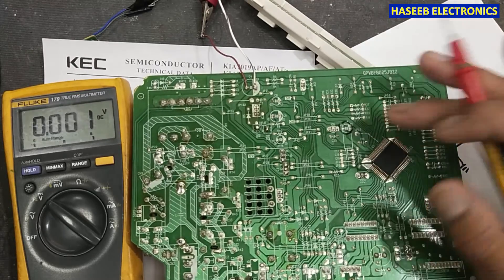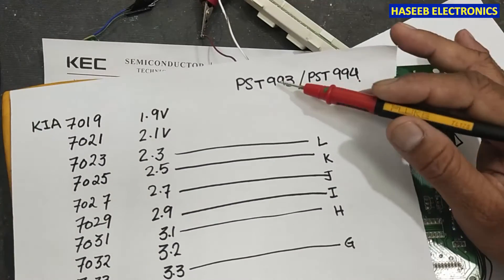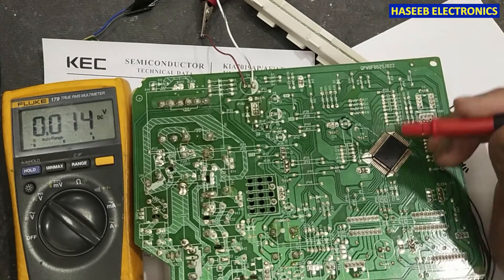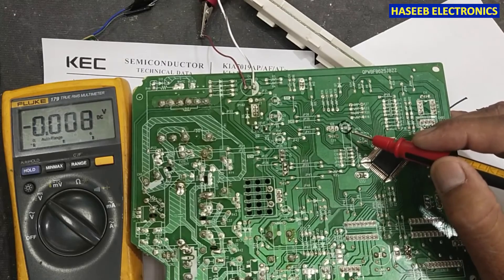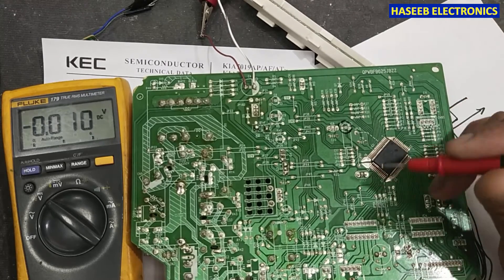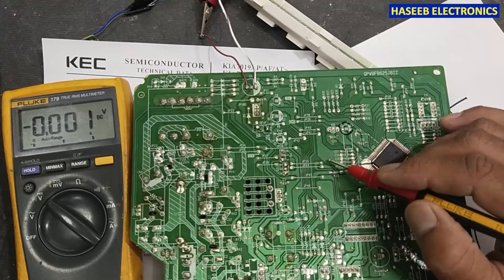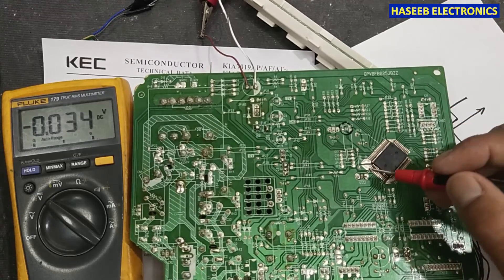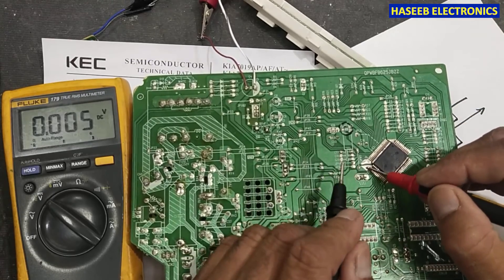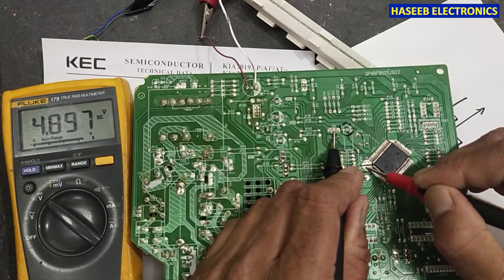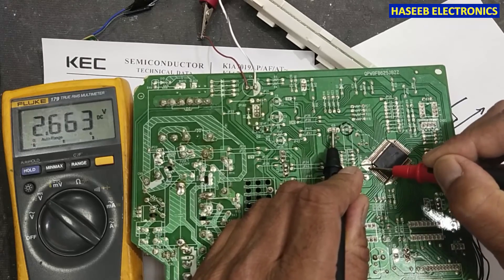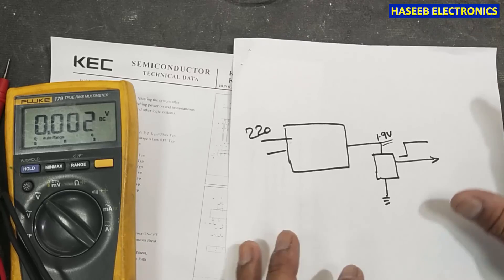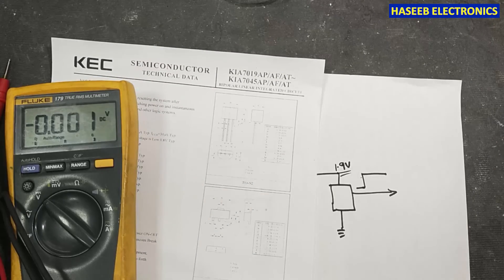We can search for the same part number, and if we don't have it, we can use the alternate part number PST 993. If we cannot find this either, we can use an RC time-based transistor switch — apply a resistor and capacitor to the base, then take the output from the emitter. This supply reaches the reset pin of the processor here. I hope this video is informative. If it is, hit the like button. If you have any questions, write in the comments. Thanks for watching. Assalamu alaykum wa rahmatullahi wa barakatuh.